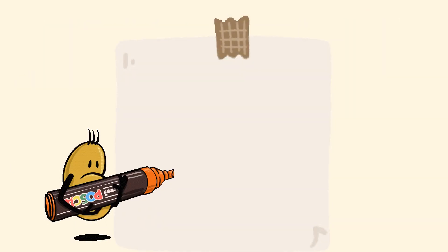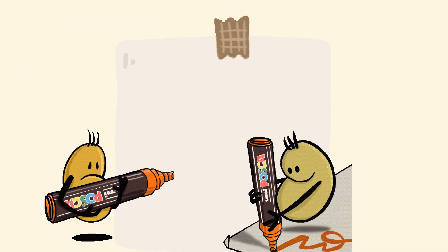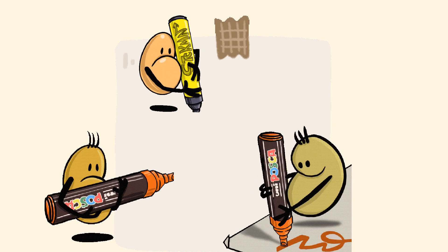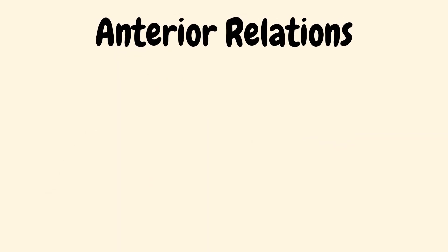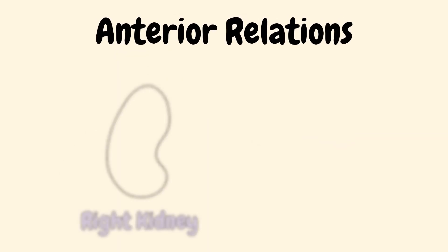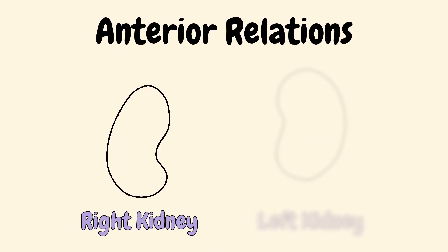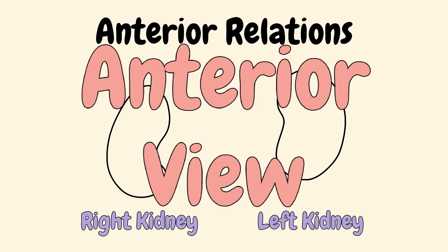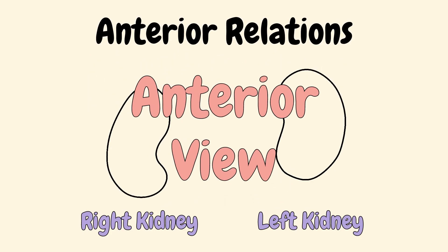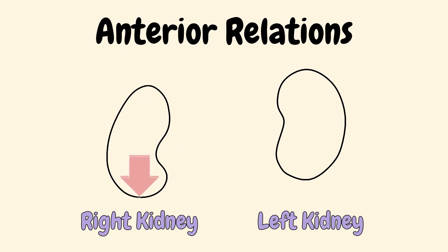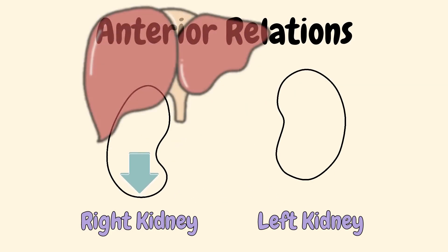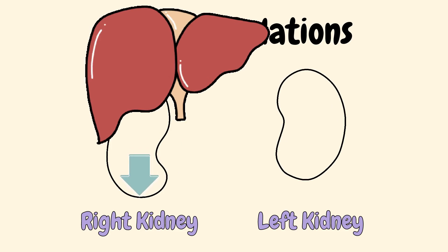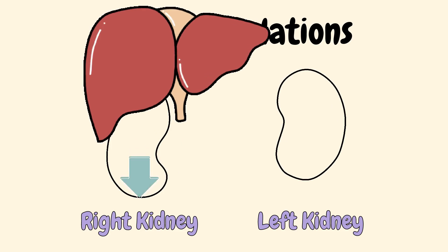Now don't be lazy — go grab some colored markers and paper. Let's first start drawing the two right and left bean-shaped figures seen from the anterior view. Notice that the right kidney is slightly lower, because the really big liver above is pressing the kidney down.